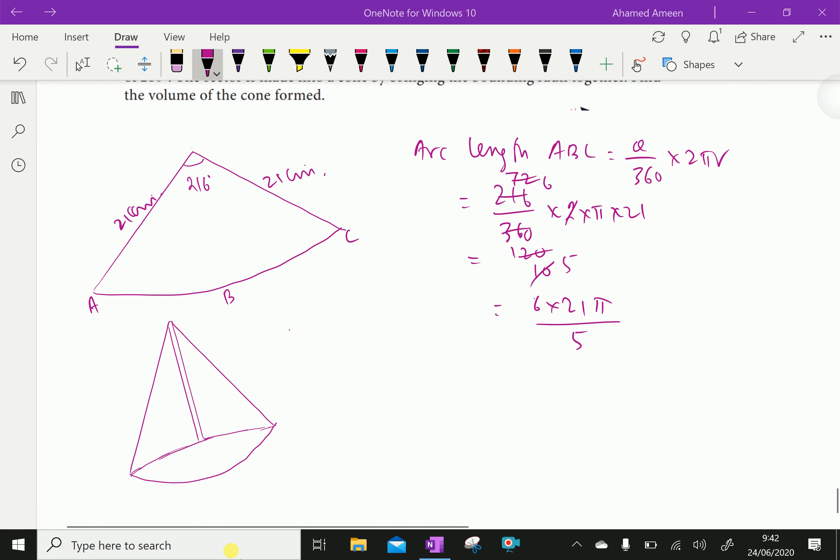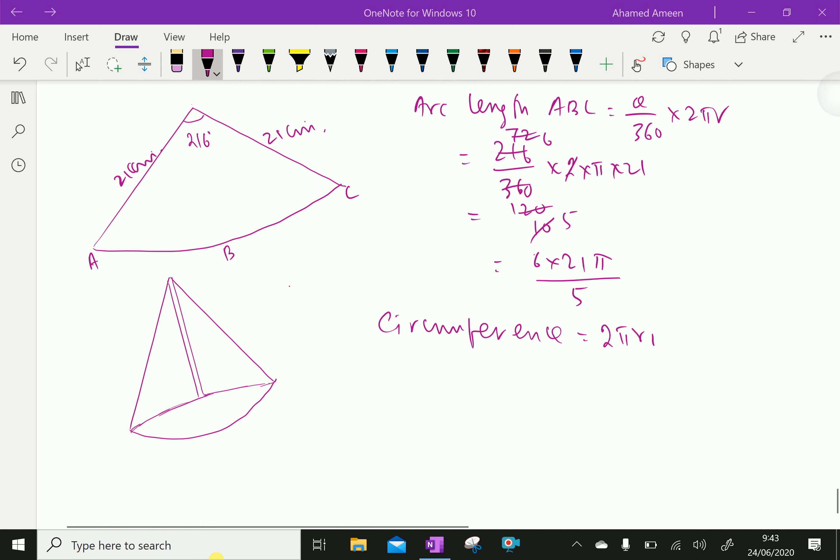This arc length becomes a circumference of the base circle of the cone after bounding. That is, circumference equal circumference is equal to 2 pi r1. So, this 2 pi r1 is 6 into 21 into pi over 5.